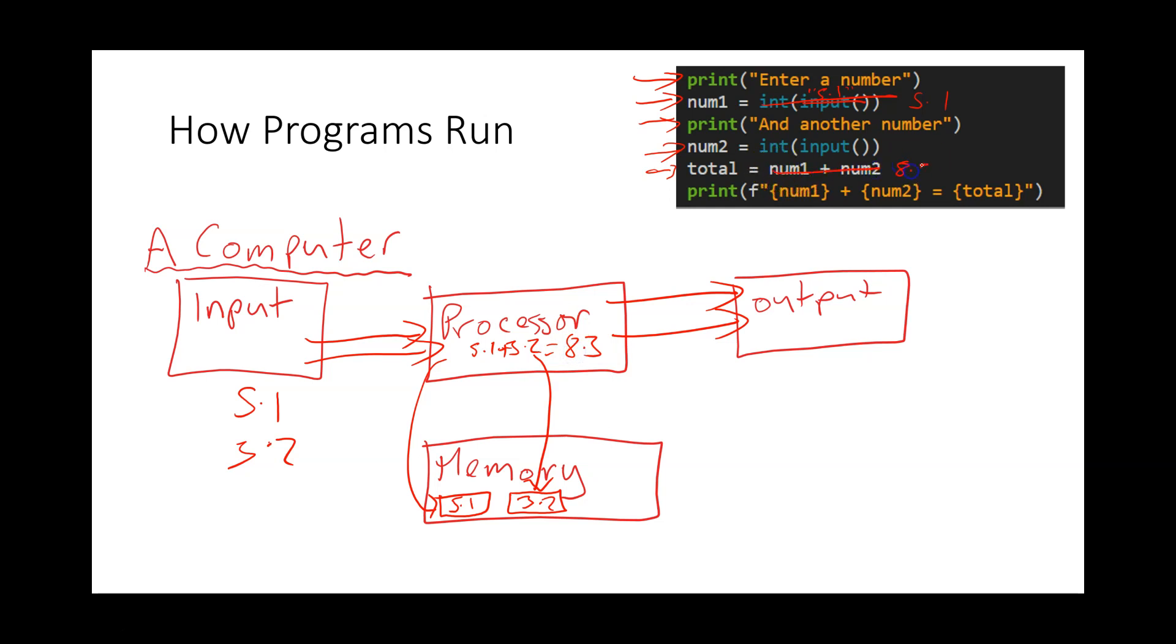Then that is 8.3 and it writes it back into total. So now we've got three variables with three bits of data in the memory.